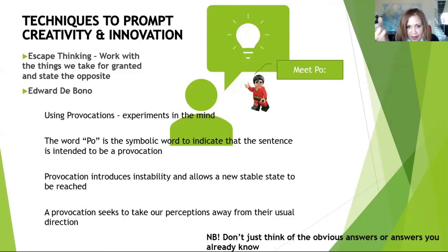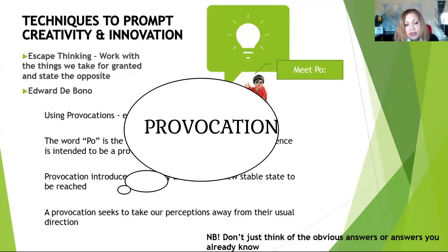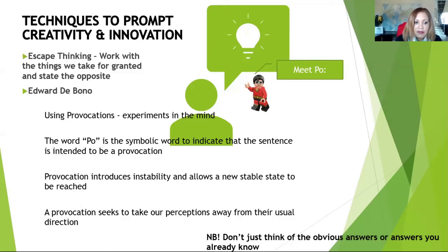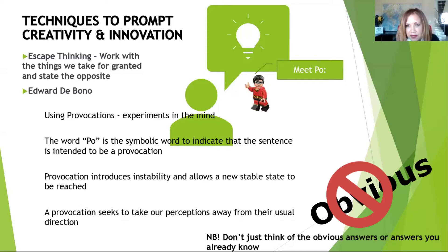If I say Poe in the beginning of the sentence, it means behind it is going to be a provocation. A provocation introduces instability and it allows a new stable state to be reached. A provocation state seeks to take our perceptions away from the usual direction. Don't just think of the obvious answers, the answers that you already know. Be brave and bold and state it differently. State the opposite.